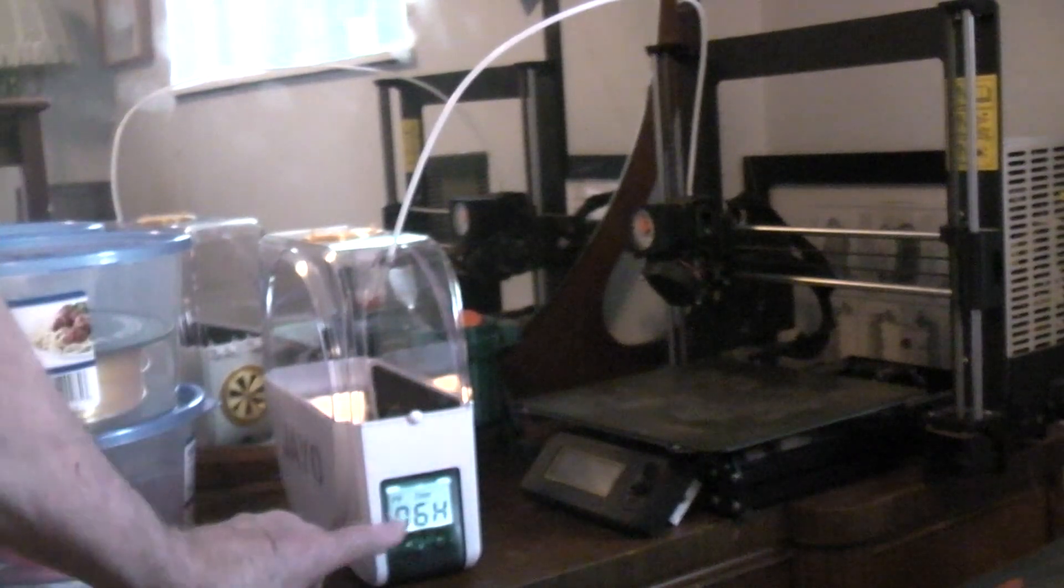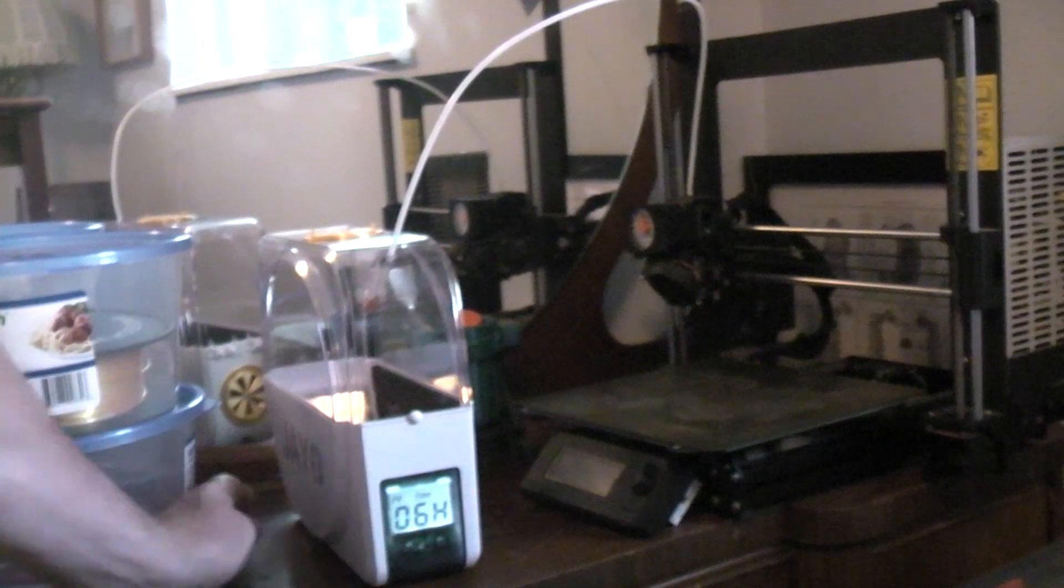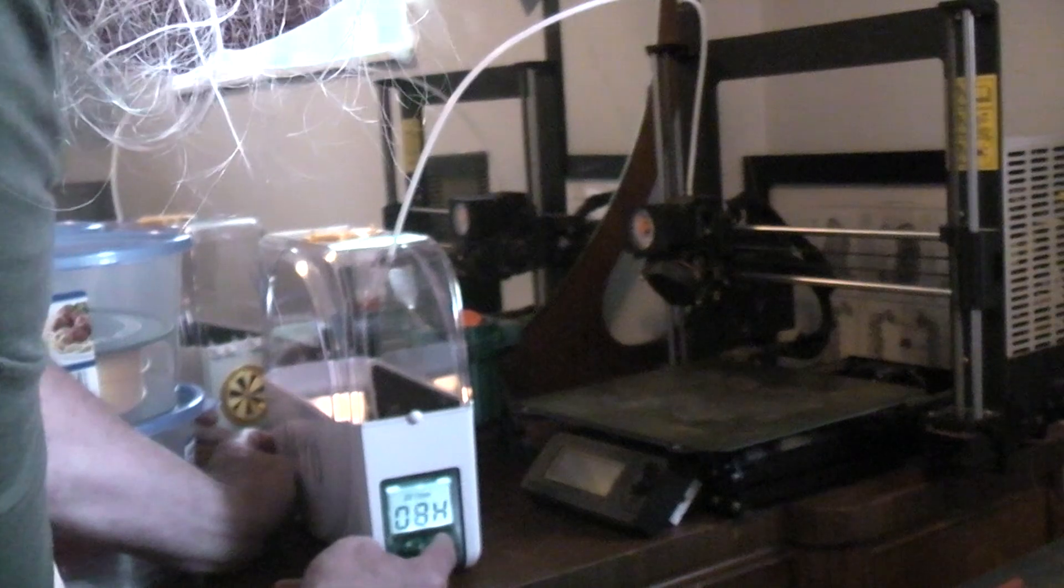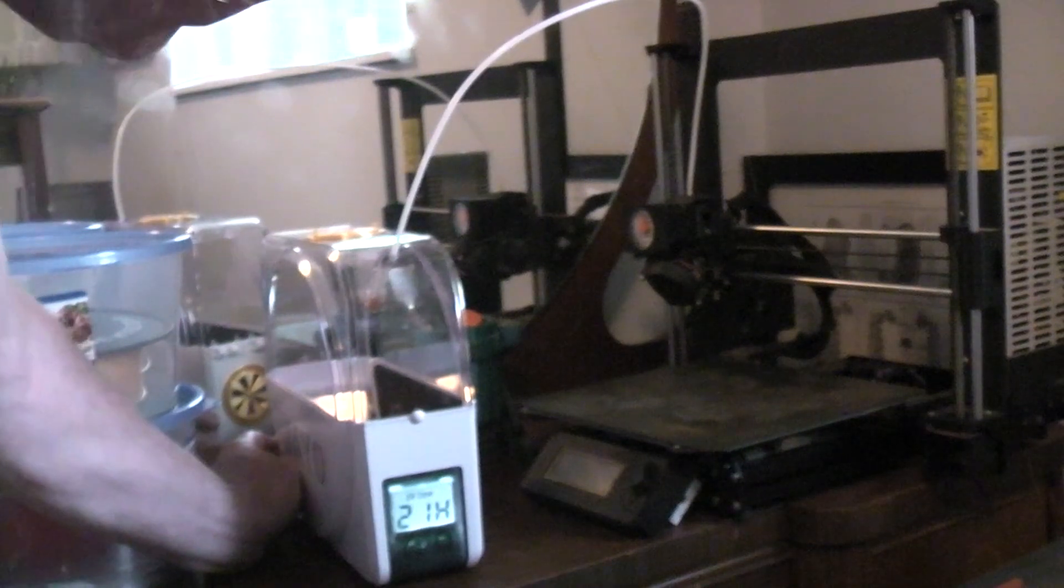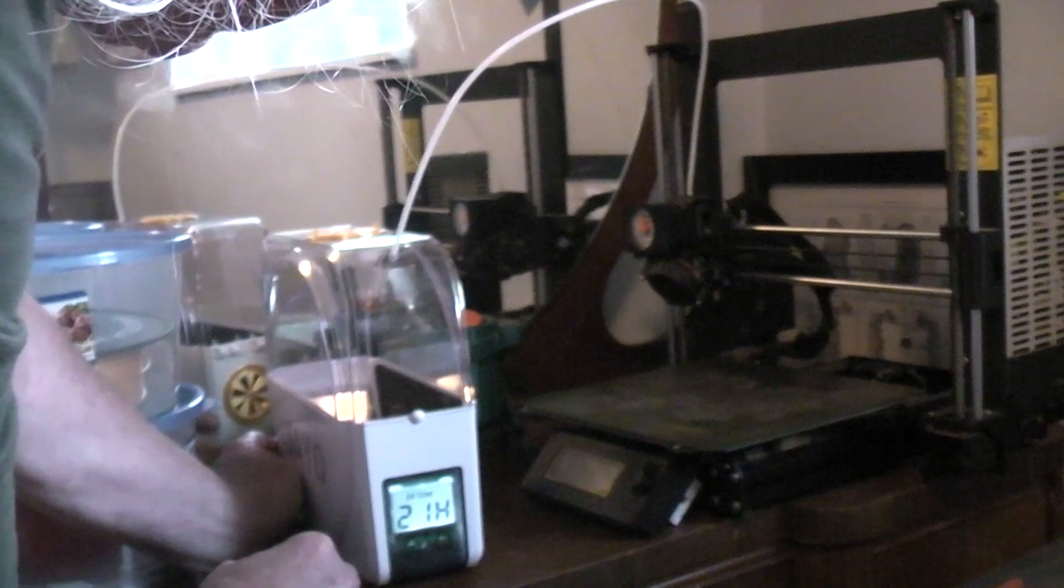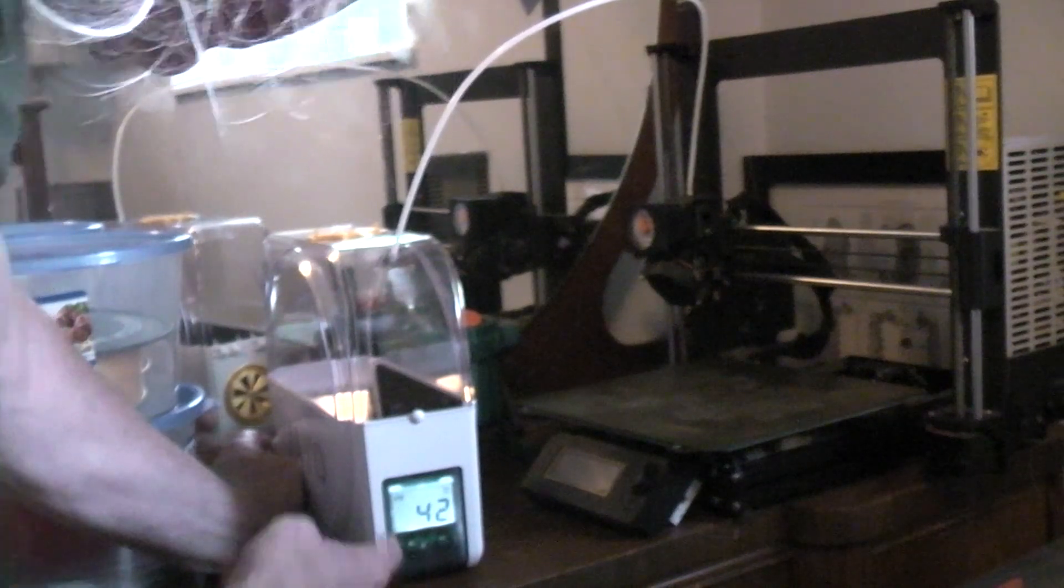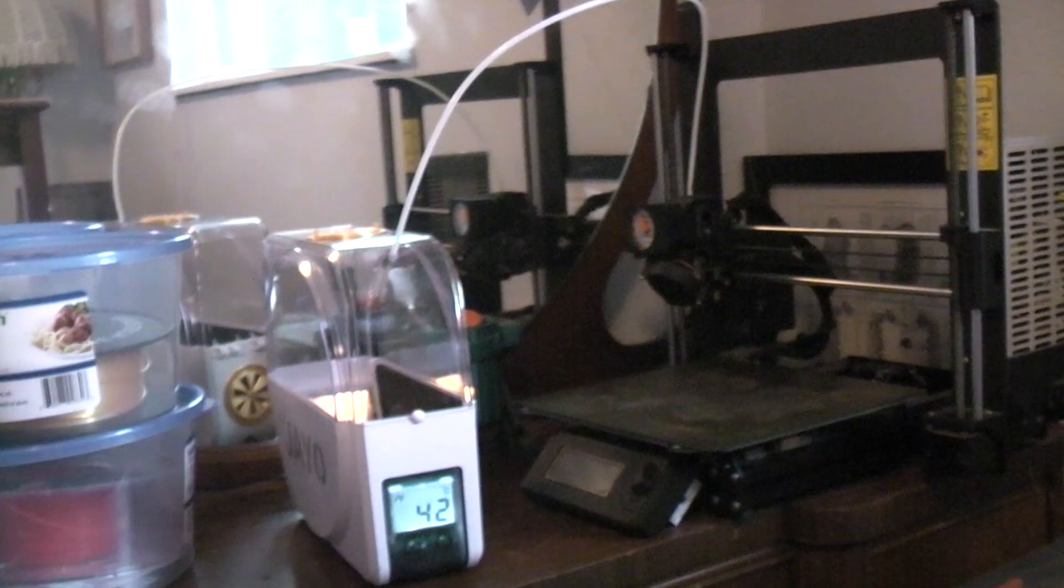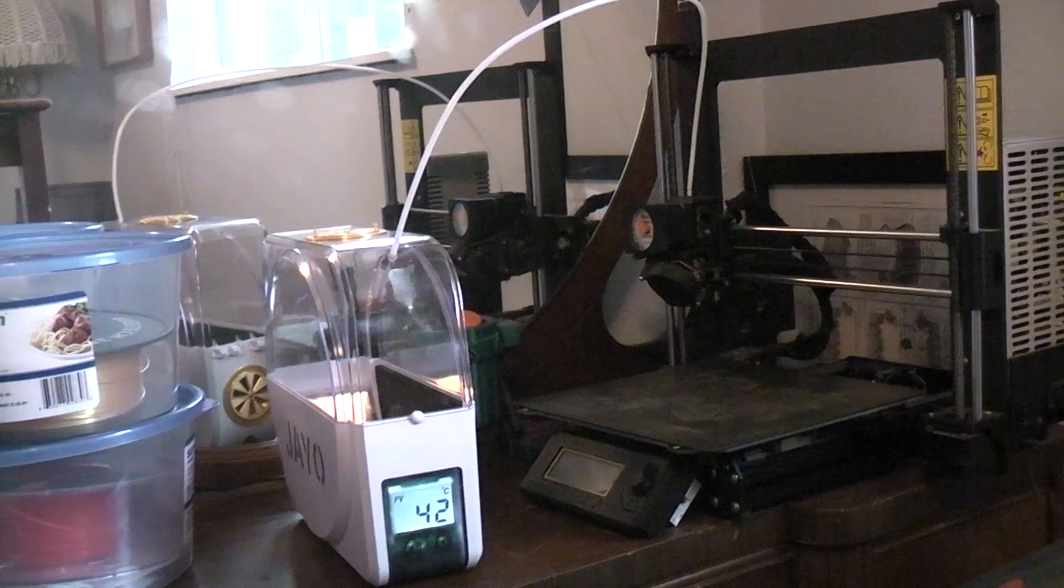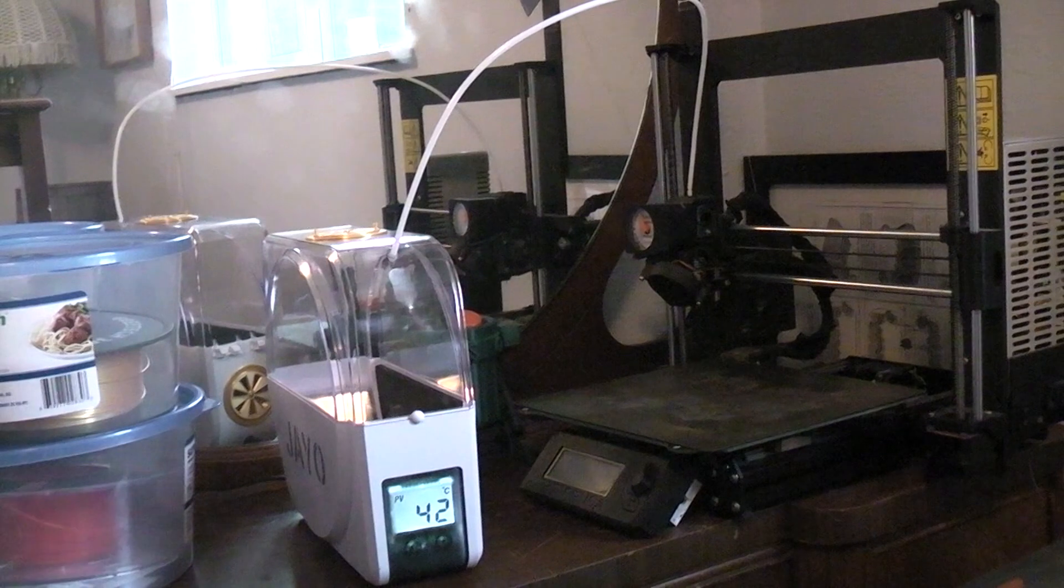If you hold the button in for about three seconds, it changes to show you how long it's going to stay on. Right now I have it set for six hours, but you can use the buttons and change it anywhere from zero up to 24. Hold the button again for about three seconds and you go back to the original screen. The easiest way to turn it off is just unplug the power from the back. It runs on a little wall wart and the power just plugs in the back.